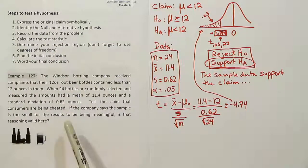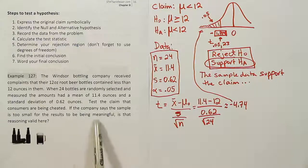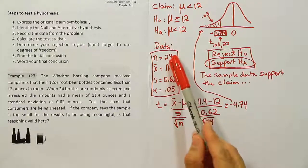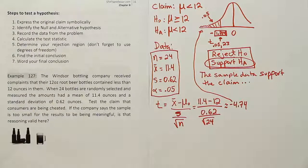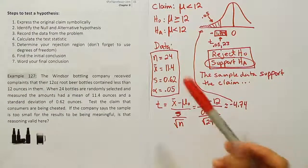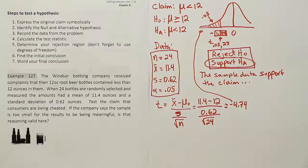Let's take a look at this last part of the problem. If the company says the sample is too small for the results to be meaningful, is that reasoning valid here? So what the company is trying to do is to try to say the small sample size prevents this result from being valid or meaningful. Well, that's actually not correct here. The small sample size does not harm the problem in this case. It could, though, in some cases. Let's try to explain when it would be a problem versus when it wouldn't be a problem.